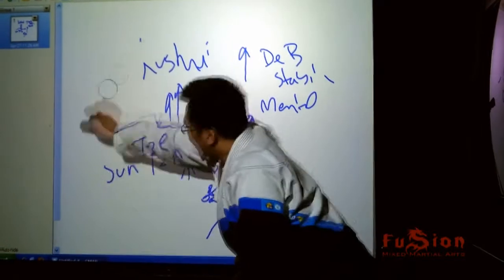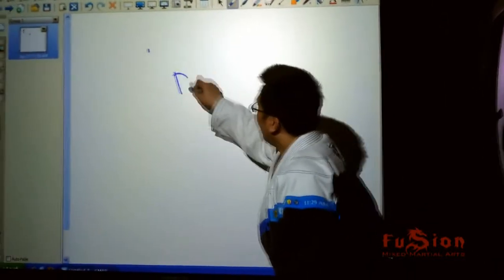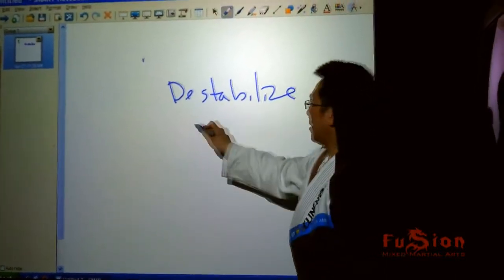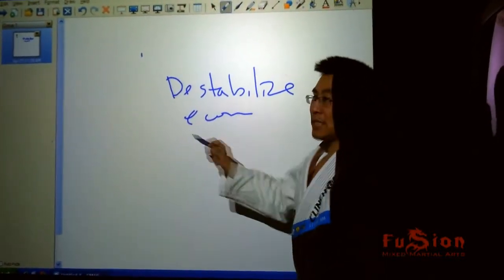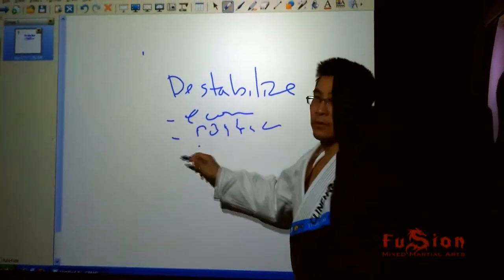So you send in spies, or you send in people to destabilize them through economic means. You destabilize them through political means or civil. Alright?